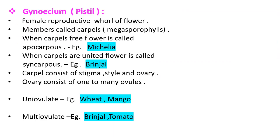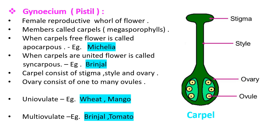Gynoecium is the female reproductive whorl of the flower. Gynoecium is also called as pistil. The members of gynoecium are called carpels, which are also called as megasporophylls. In some flowers, carpels are free — such flowers are called apocarpous. In some flowers, carpels are united and such flowers are called syncarpous. Example of syncarpous: brinjal.